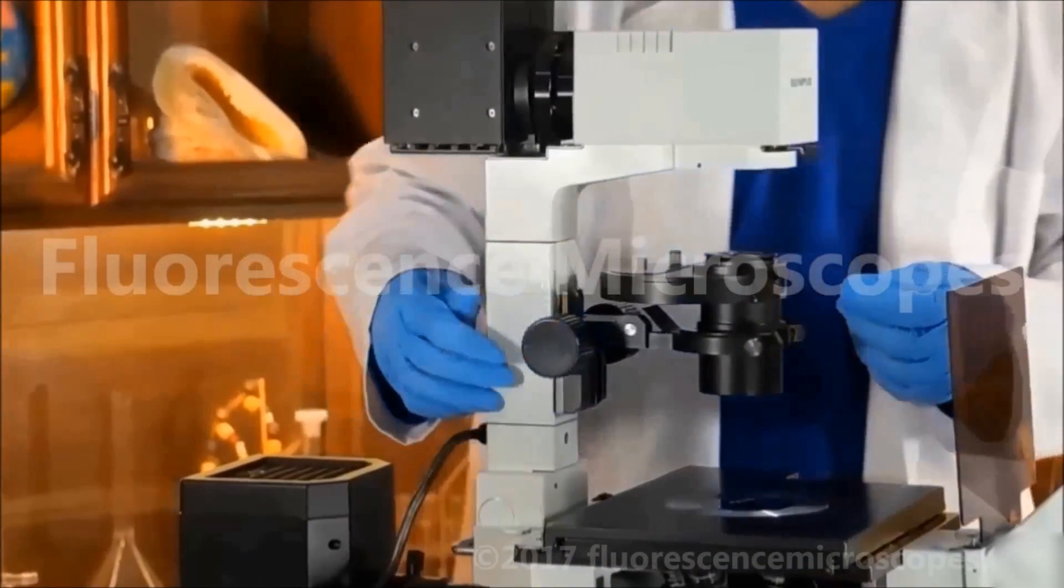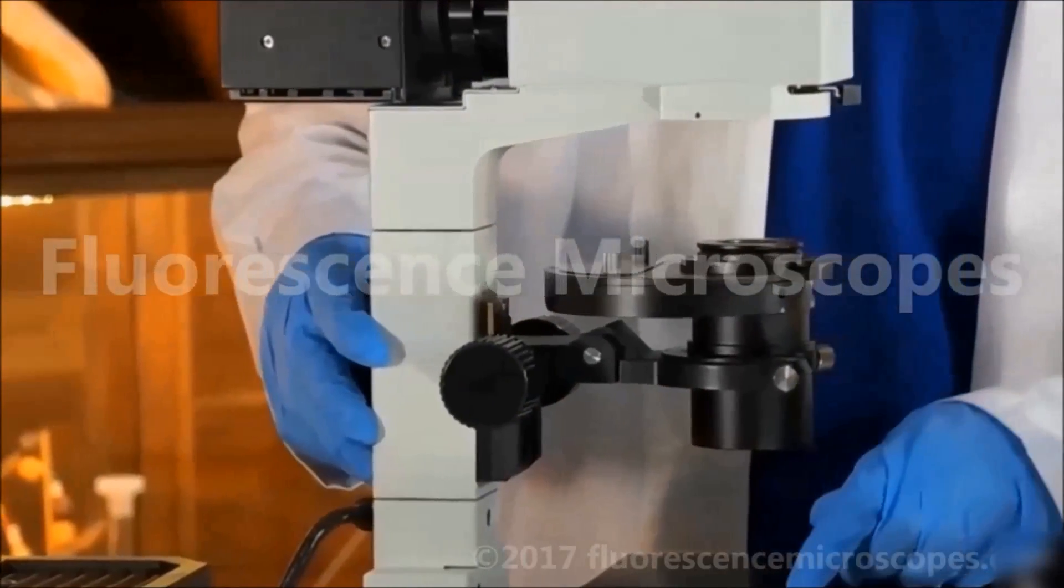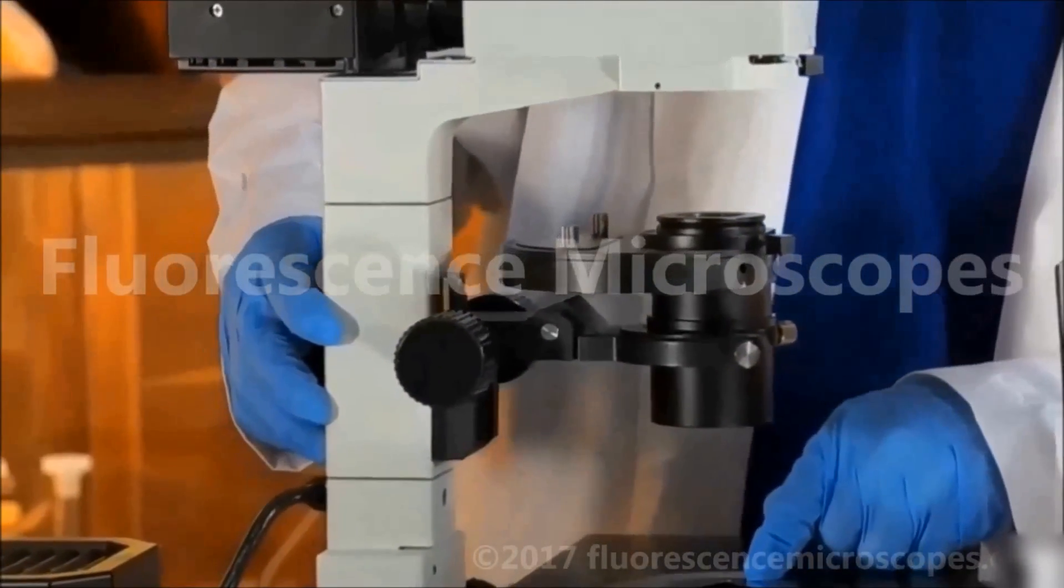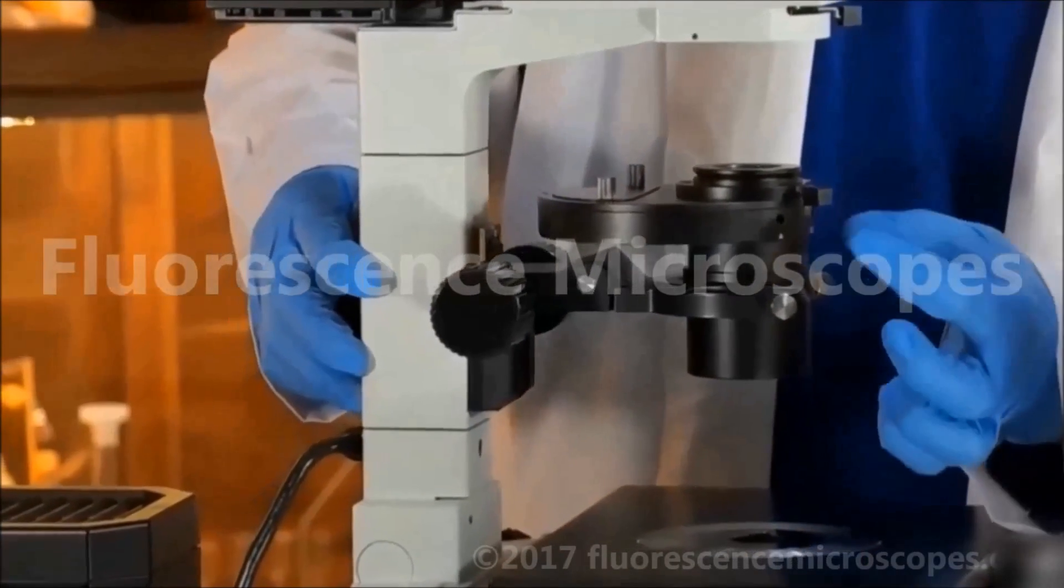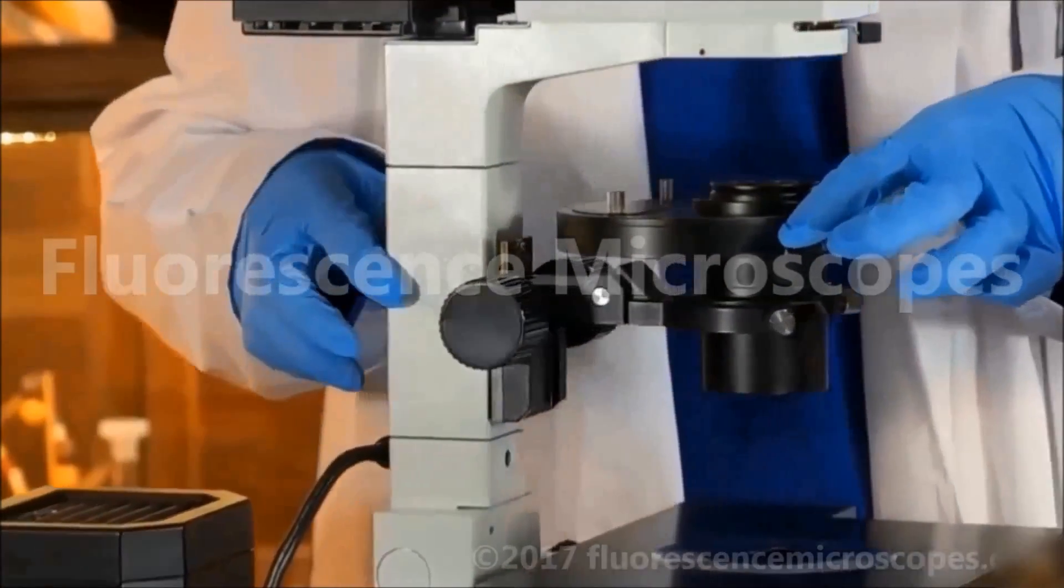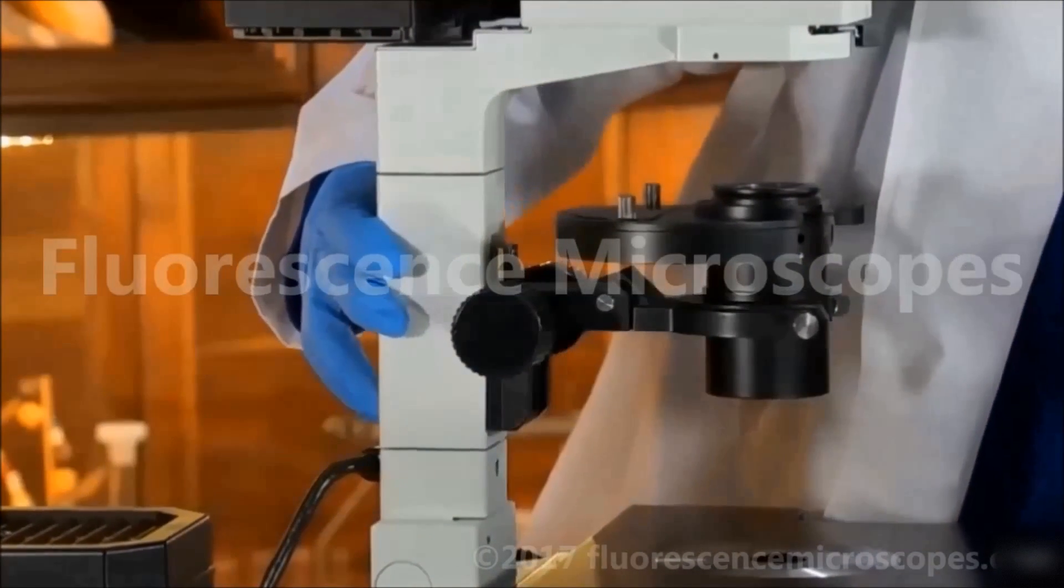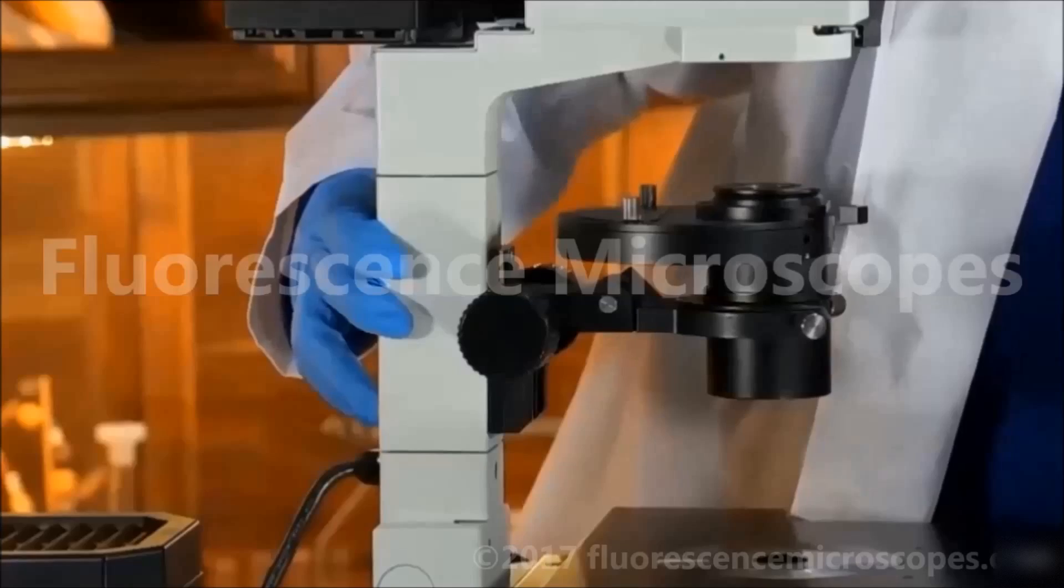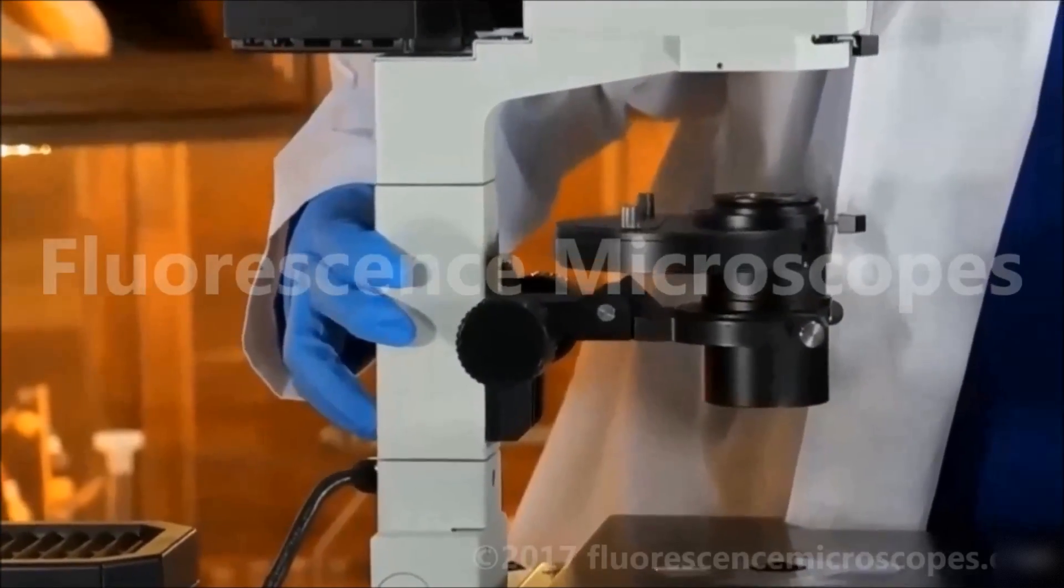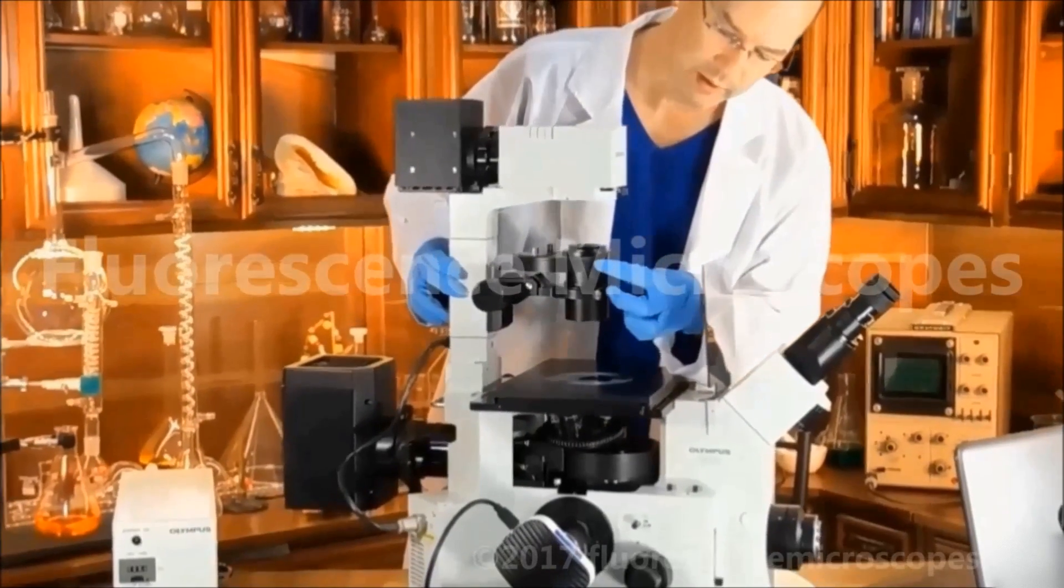To center the phase annulus inside the condenser with the phase ring inside the objective, the back aperture plane, you would use these two screw openings. And you would use these two screws. These little 1.5 millimeter hex screws. You can screw them in these openings.